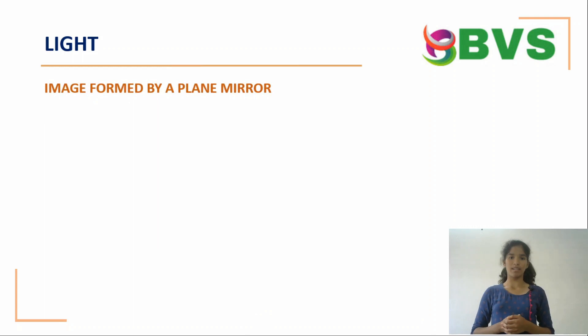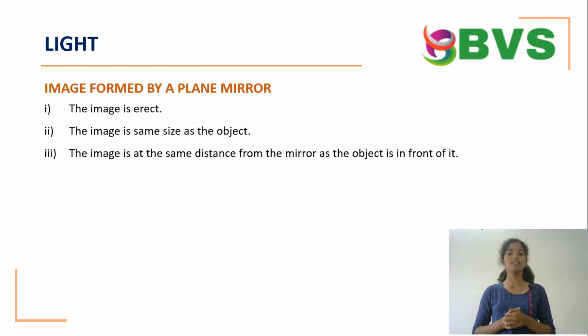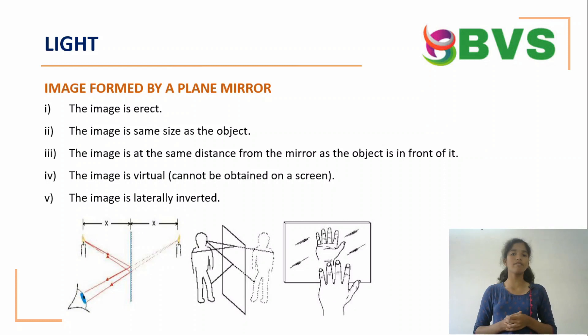Image formed by plane mirror. The image is erect. The image is same size as the object. The image is the same distance from the mirror as the object is in front of it. The image is virtual, cannot be obtained on screen. The image is laterally inverted.